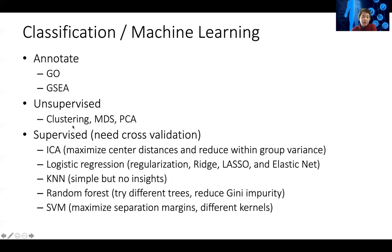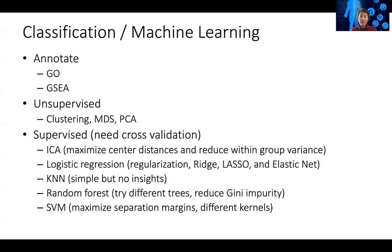For machine learning, there are unsupervised and supervised approaches. Unsupervised learning doesn't look at sample labels ahead of time — you just cluster samples using hierarchical clustering, MDS, or PCA, which are also dimension reduction approaches. You then label each cluster by color and determine which cluster an unknown sample is closest to. This approach relies on the data being well-separated; sometimes depending on noise the clusters are not clearly separated.